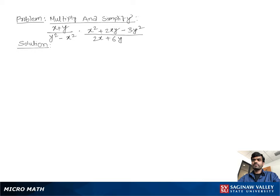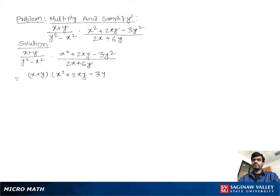Multiply and simplify: (x + y) / (y² - x²) times (x² + 2xy - 3y²) / (2x + 6y). We are multiplying top to top and bottom to bottom, so we can write (x + y) times (x² + 2xy - 3y²) over (y² - x²) times (2x + 6y).